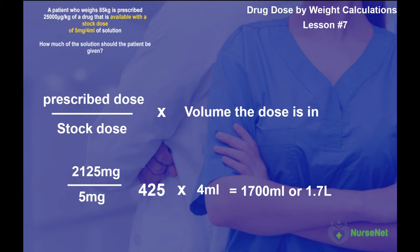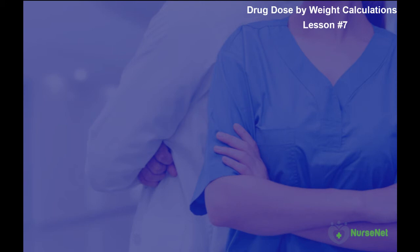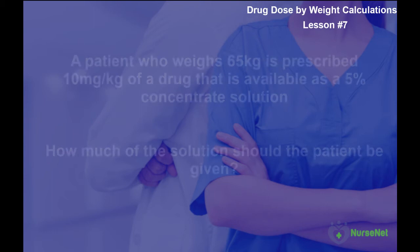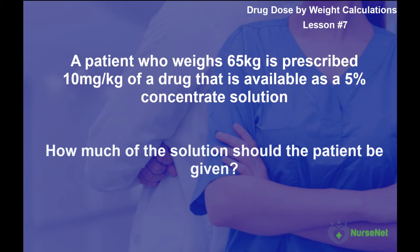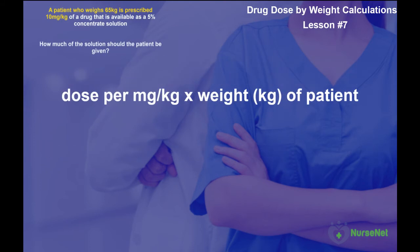Now let's look at a similar question, but this time the solution is a concentrate represented as a percentage. A patient who weighs 65 kilograms is prescribed 10 milligrams per kilogram of a drug available as a 5% concentrate solution. How much of the solution should the patient be given? Breaking into two parts — part one, working out the prescription amount: 10 milligrams per kilogram multiplied by 65 kilograms gives us 650 milligrams.